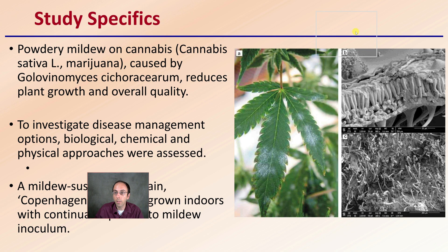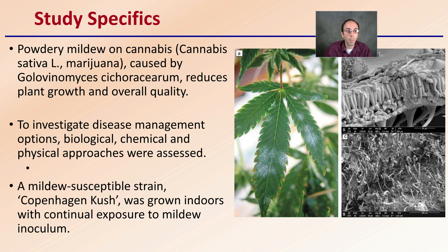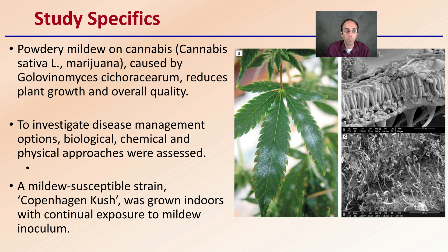What are the specifics of this study? Powdery mildew on cannabis is caused by a particular fungus, and keep in mind there are different versions of powdery mildew even though they share the same common name. For example, powdery mildew of squash is different from powdery mildew that affects bee balm or lilacs — there are different variants. To investigate disease management options, biological, chemical, and physical approaches were assessed. A powdery mildew-susceptible strain was grown indoors with continuous exposure to powdery mildew inoculum to really test the effectiveness of this product.